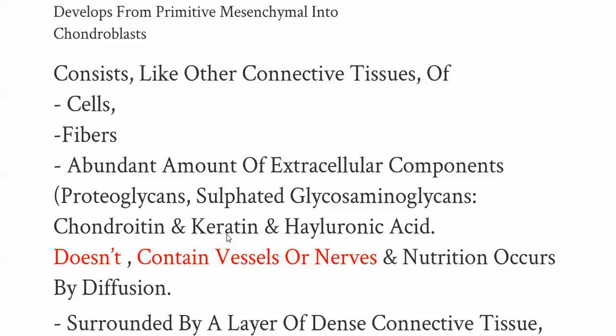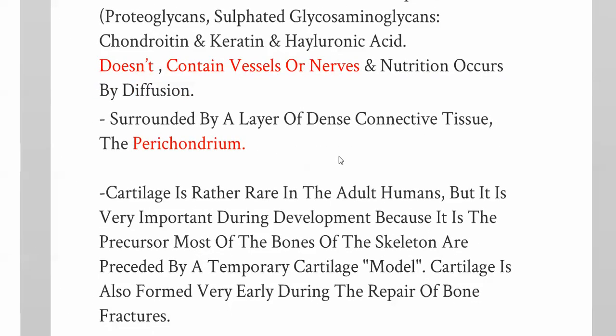The most important information about cartilage: it doesn't contain vessels or nerves — so it's avascular and has no nerves — and nutrition occurs by diffusion. It's surrounded by a layer of dense connective tissue called the perichondrium. Cartilage is rather rare in adult humans but very important during development; in the early fetal period, the skeleton is almost entirely cartilage, and after a few years it is replaced by bone.